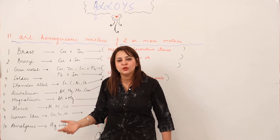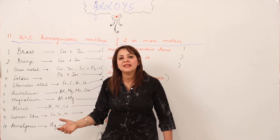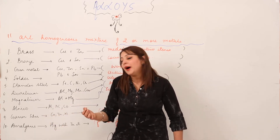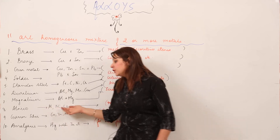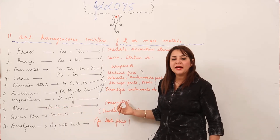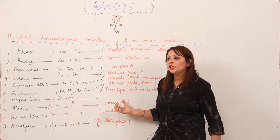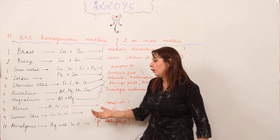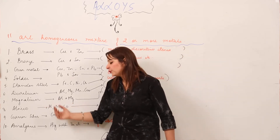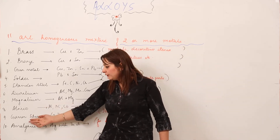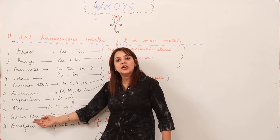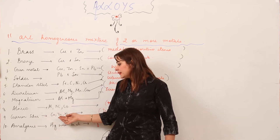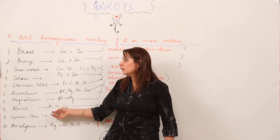Next we have alnico. Its name makes it easy to remember its constituents — alnico is a mixture of aluminium, nickel, and cobalt. It is used in making magnets; the magnets you use in the lab or anywhere else are made up of alnico.